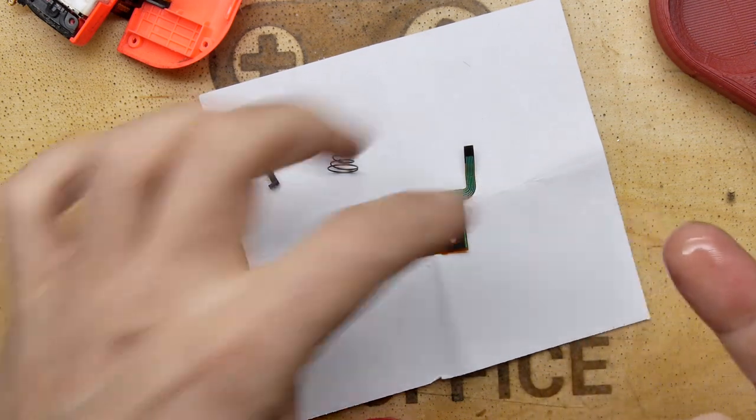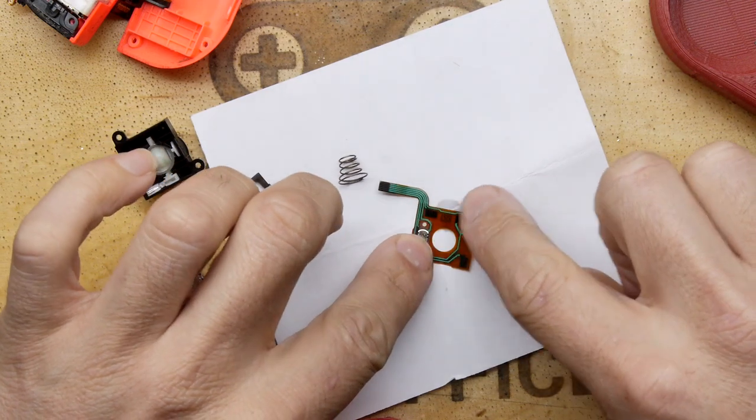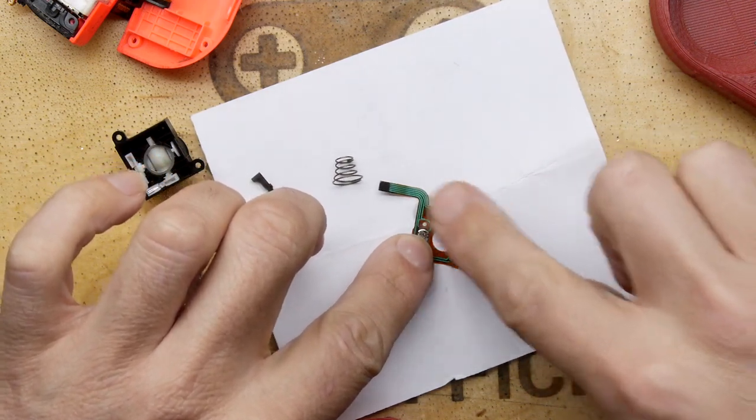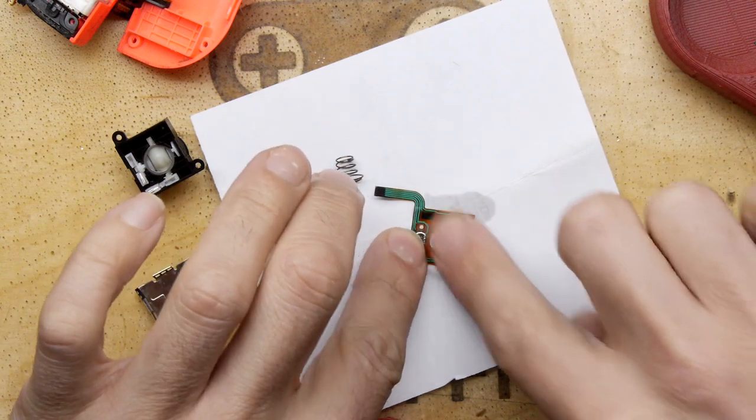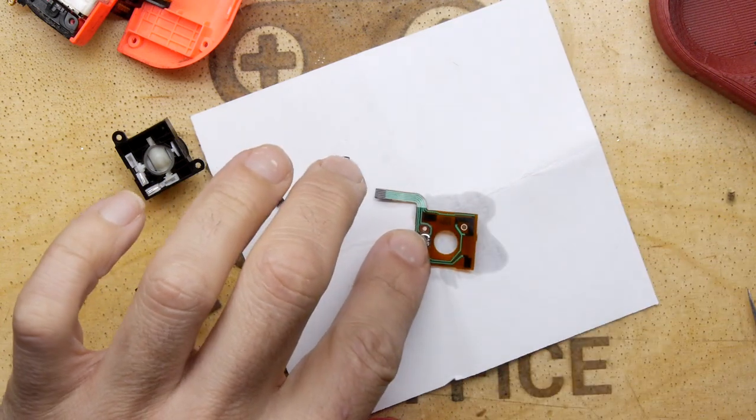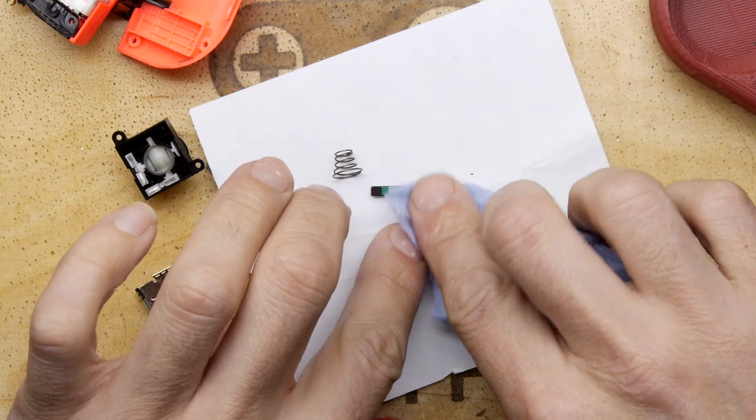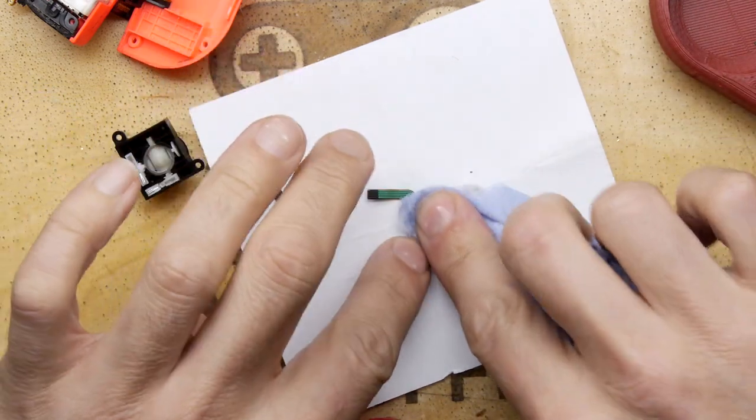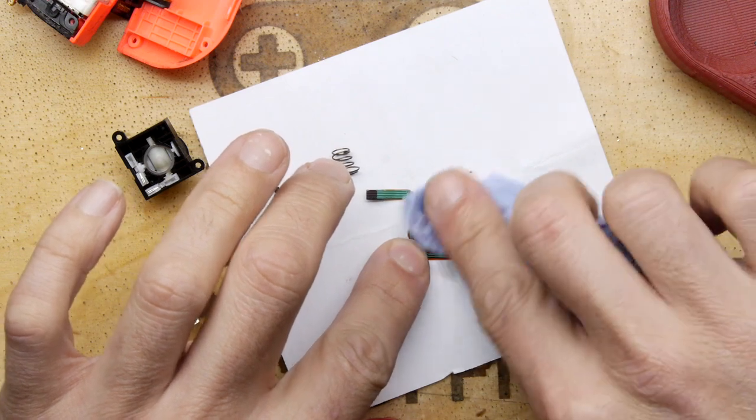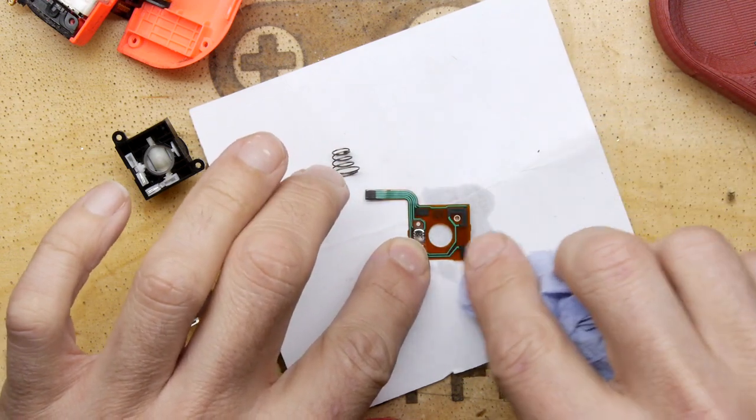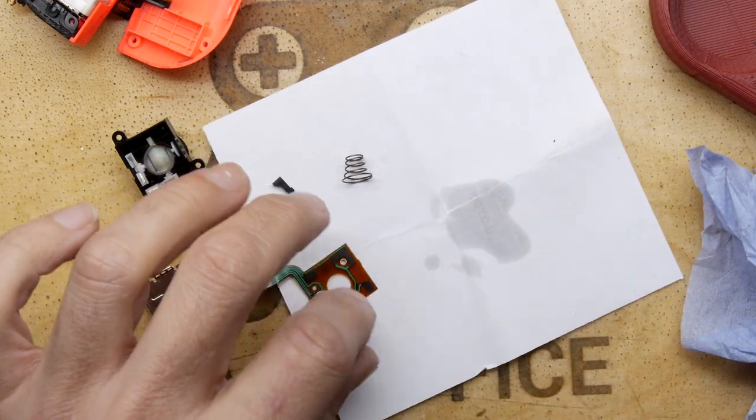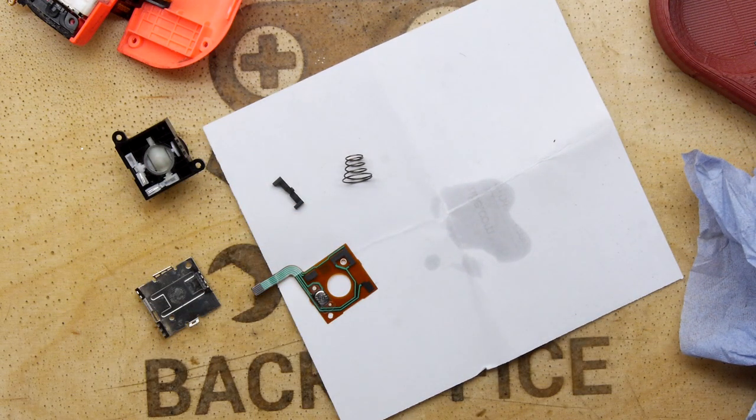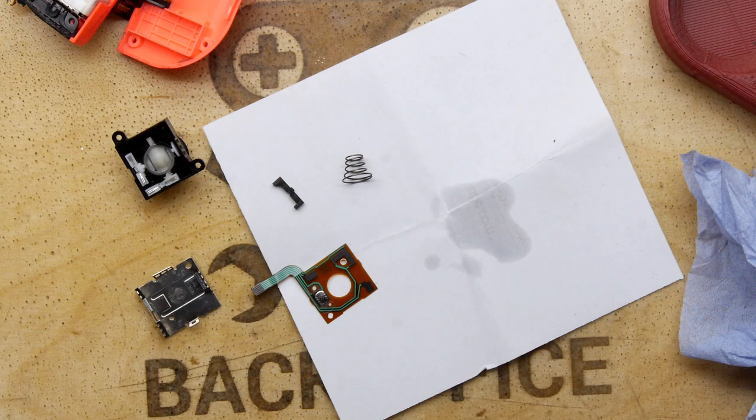I'm going to put a dab of IPA on my finger and just very gingerly rub it on there. I can feel that little grease coming off. I'm just going to get a bit of the old blue paper, give it a quick once over. And that I think is doing it. I can see already nice and shiny, nice and clean, which leads us to the bit I was trying to avoid, which is the dreaded reassembly.